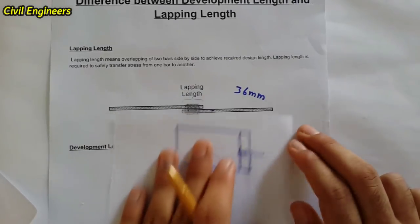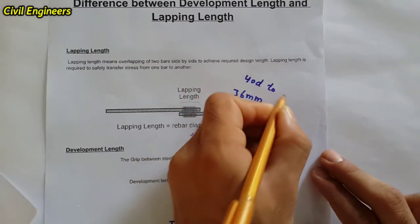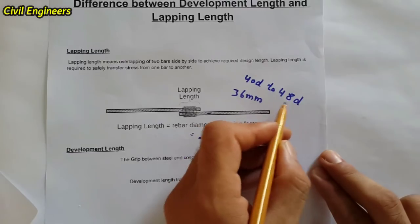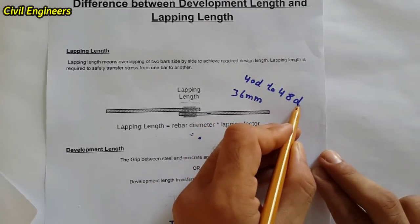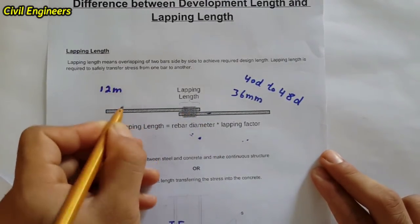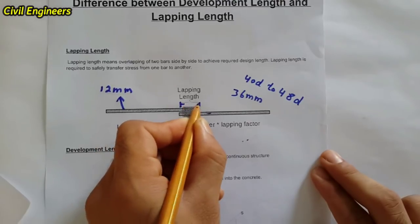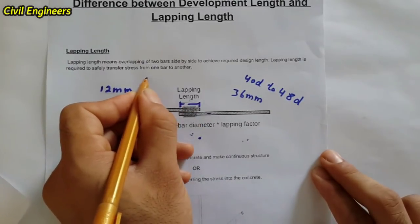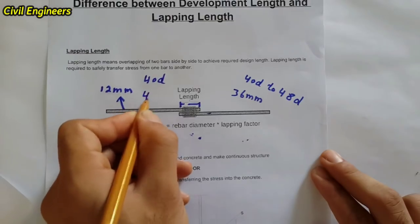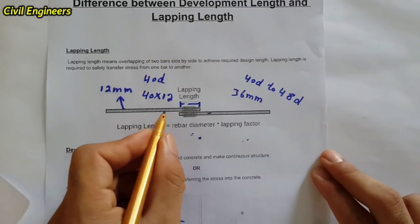We can use the formula 40d to 48d to calculate the lapping length, where d is the diameter of the bar being overlapped. For example, if the steel bar diameter is 20 mm, the lapping length would be 40 × 20 mm to 48 × 20 mm, giving a range of 800 mm to 960 mm.